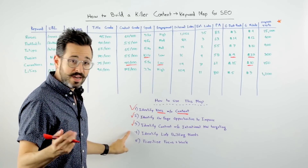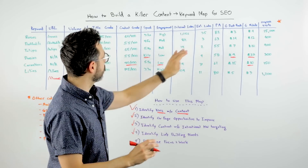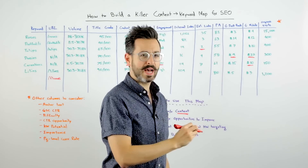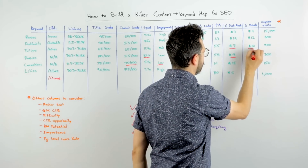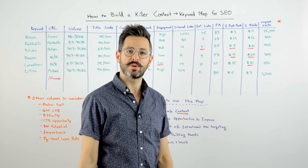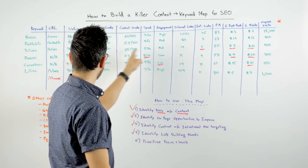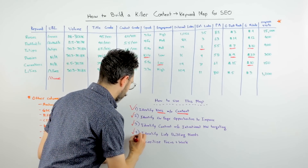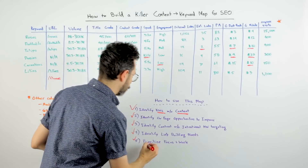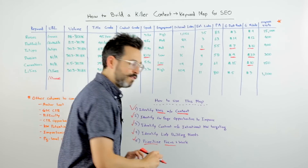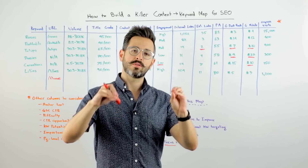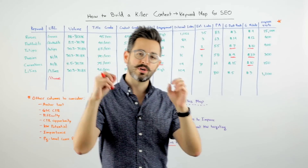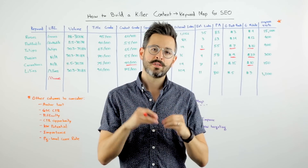Next, you're going to identify link building needs. You might look in here and say your external links are pretty bad, and your rankings reflect that — that page is not going to rank without link building, even if it's doing all right on-page. This whole exercise is designed to help you prioritize and focus your work so that you can do the most important things after your audit and really move the needle with your SEO.